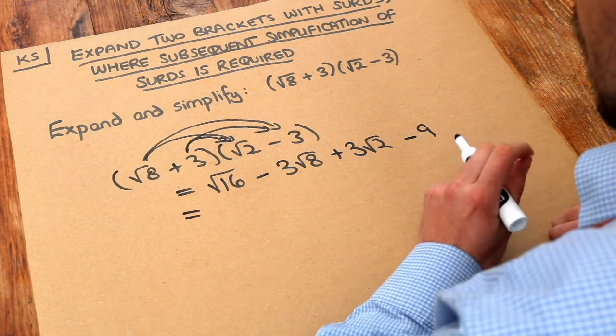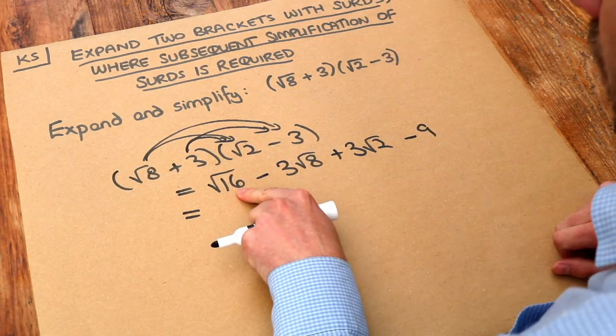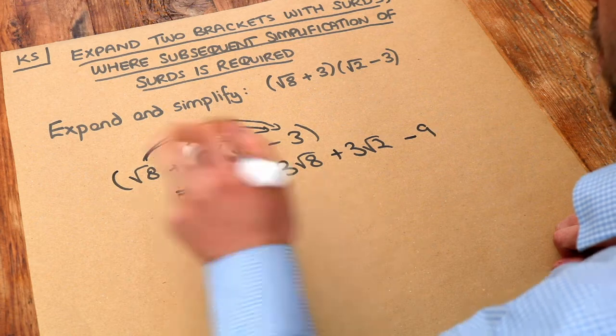This is the point where I start to simplify some stuff. Now the square root of 16, 16 is a square number so it's just 4.